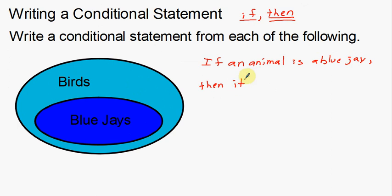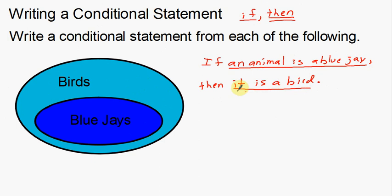Then it — the animal — is a bird. So: if an animal is a blue jay, that's the hypothesis; then it is a bird, that's the conclusion. What was difficult about that is I had to come up with something not blatantly given to me. The previous example gave us all the words — triangles, obtuse angles. But this example didn't give us the 'animal' part; I had to think beyond what was given and use vocabulary not staring me right in the face.